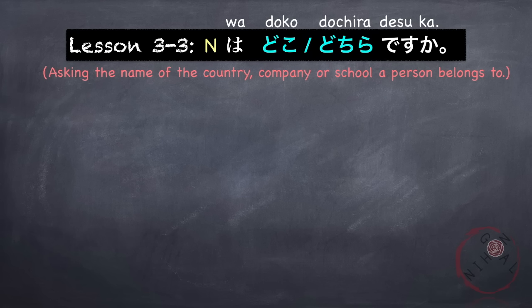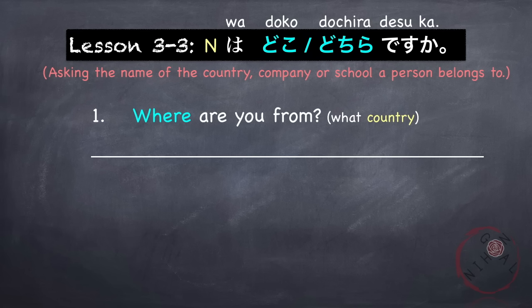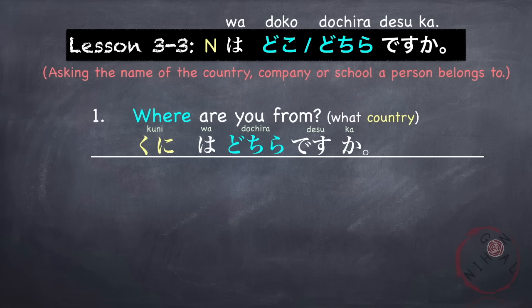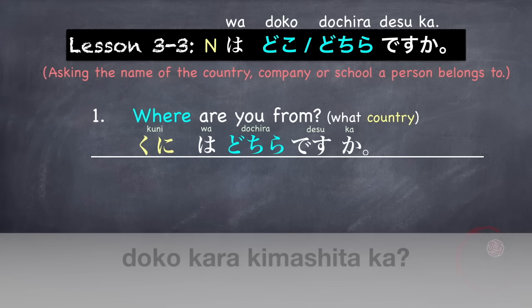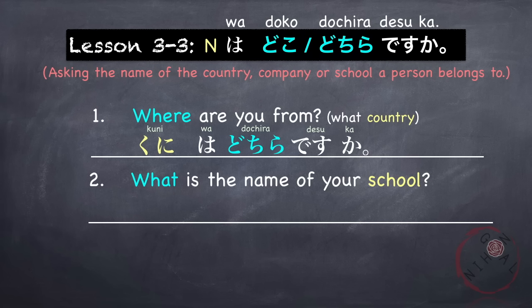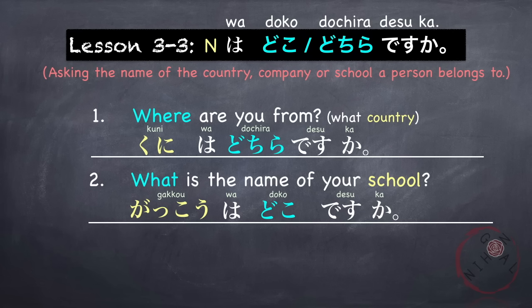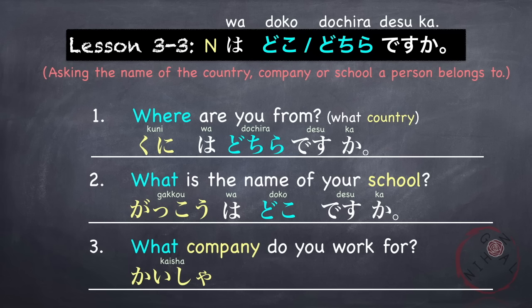This pattern N wa doko desuka can also be used to ask the name of the country, company, or school a person belongs to. For example, 'Where are you from?' or 'What country are you from?' — Okuni wa dochira desuka? Another way to ask is: Doko kara kimashita ka? You can also ask 'What is the name of your school?' — Gakko wa doko desuka? Or 'What company do you work for?' — Kaisha wa doko desuka?